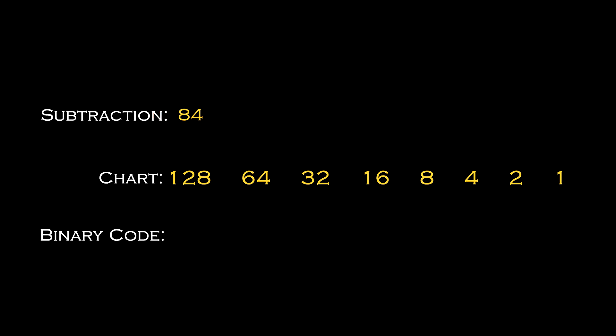So once you have a number selected, you'll compare it to each of the numbers on the chart starting from left to right. If the number on the chart is larger than our 84, then we don't have to do any math. As you can see, 128 is in fact larger than 84, so we simply add a zero to the binary code section of the chart underneath the 128. This section is where we'll get our ultimate result. Then you move right to the next number and repeat the process.